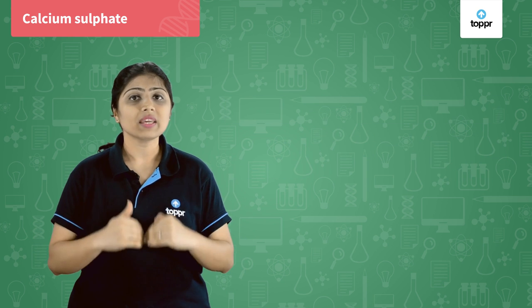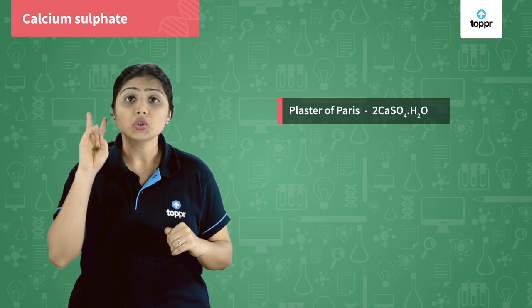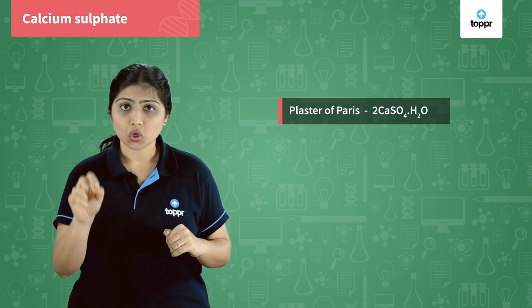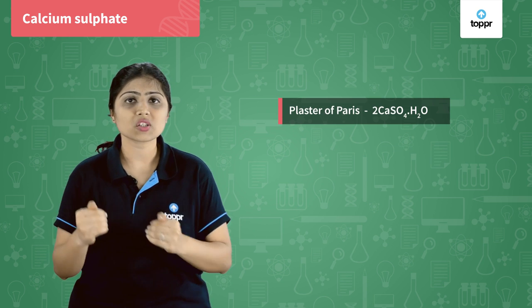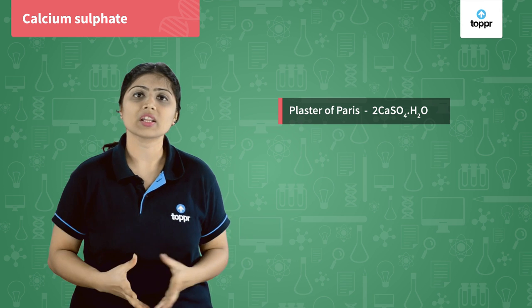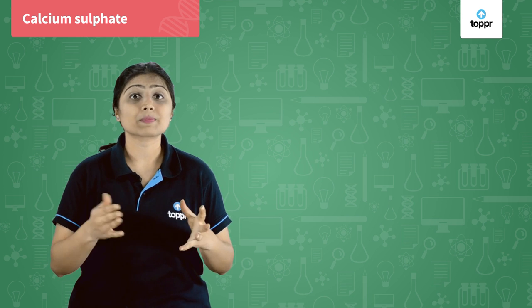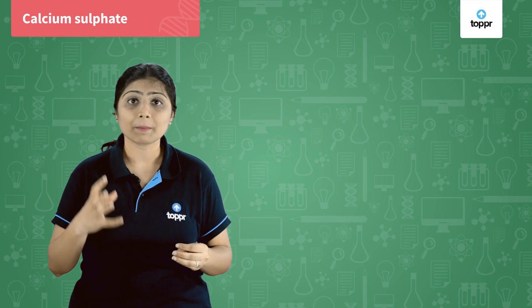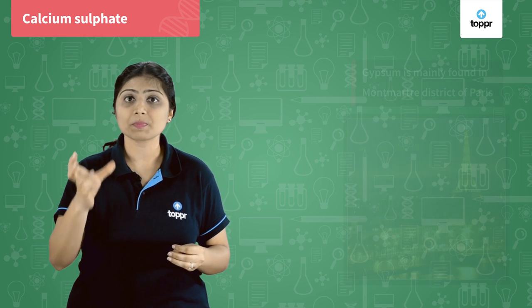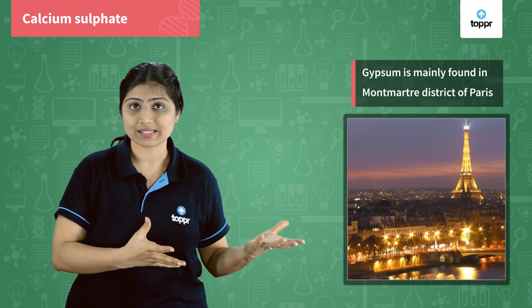We can also write the formula of plaster of Paris as 2CaSO4·H2O. Plaster of Paris has been given this name because it is made by heating gypsum, and gypsum is mainly found in Montmartre, Paris.